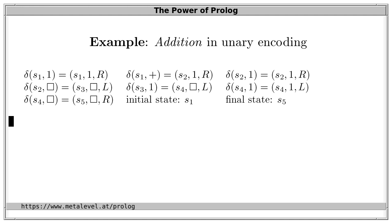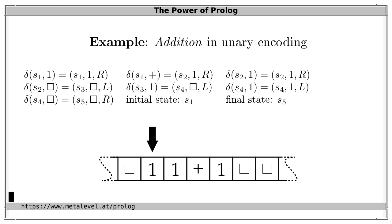Here is a Turing machine that computes addition in unary encoding, meaning a natural number n is represented by n ones. This is a Turing machine with 5 states: S1 is the initial state and S5 is the final state. This Turing machine computes the sum of two natural numbers on the tape and replaces the initial tape content by that sum. For example, if the initial tape content is 2 plus 1 in unary encoding — two 1s, then a plus symbol, then one 1 — the machine computes 2 plus 1.